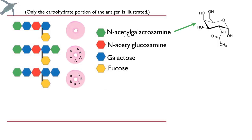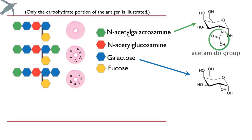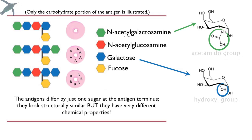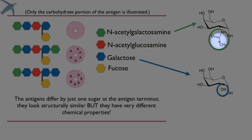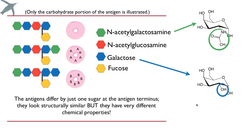People with B antigens — instead of adding that, you add a galactose. Now when you look at these, you'll notice that they're very similar in structure. This is an acetamide group and this is a hydroxyl group. Even though they look similar, chemically they are very different — they have different properties. This group is a hydrogen bond acceptor while the hydroxyl group is a hydrogen bond donor. So the point is that they do have different chemical properties even though they look rather similar.